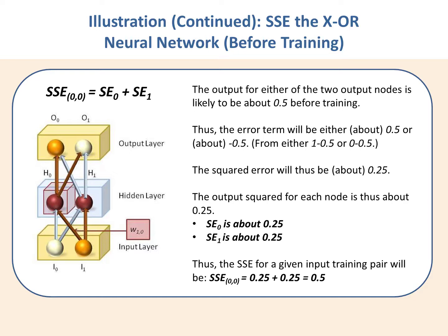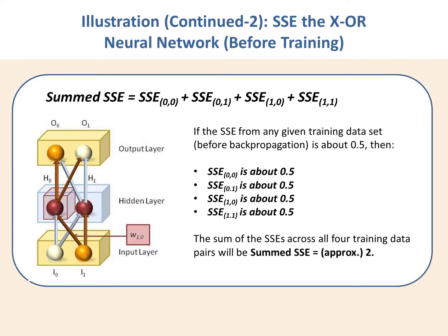Adding the squared errors across both output nodes gives us 0.5. If your program sums the SSE across all training sets, and we have four different training data sets, you sum 0.5 four times and get a total value of 2.0.